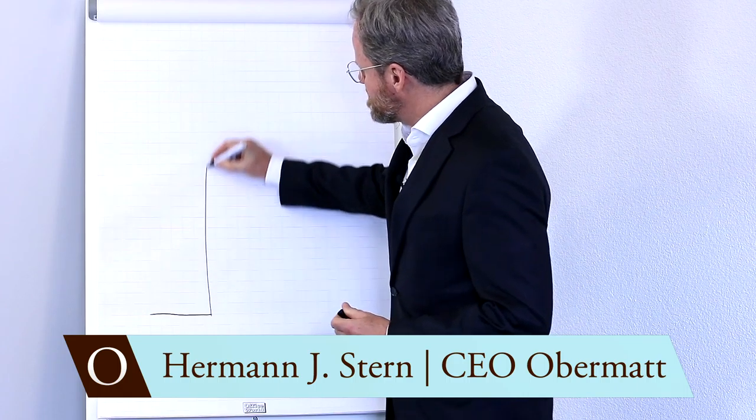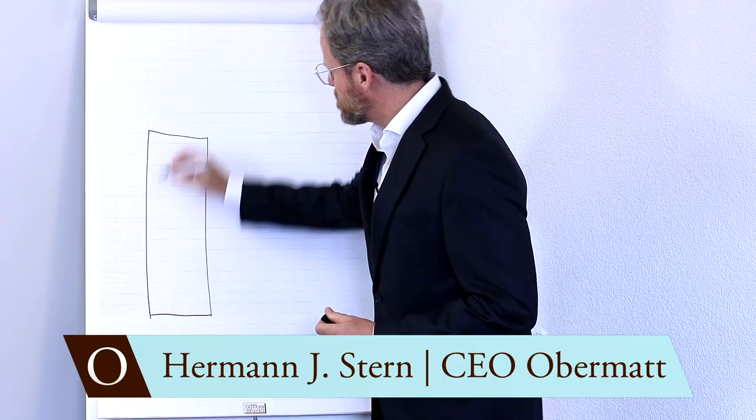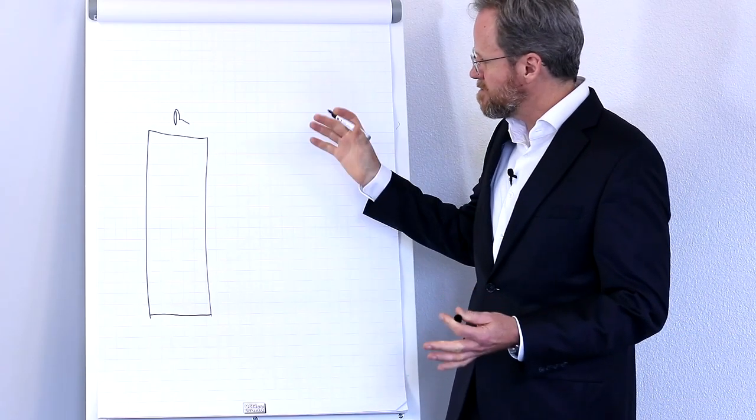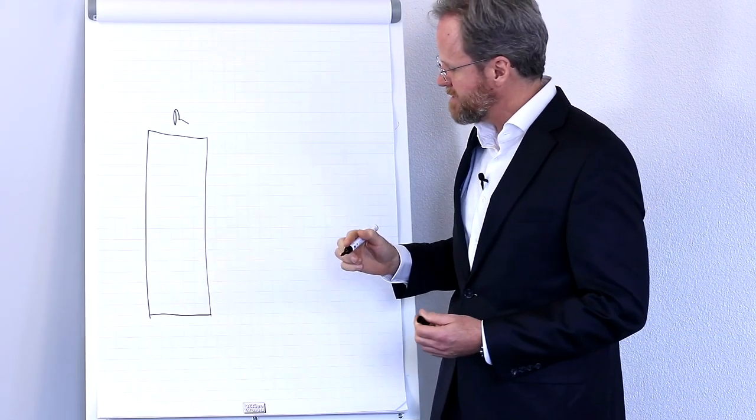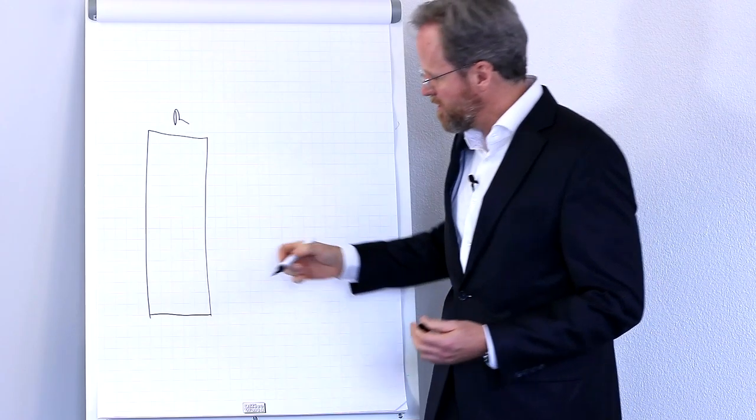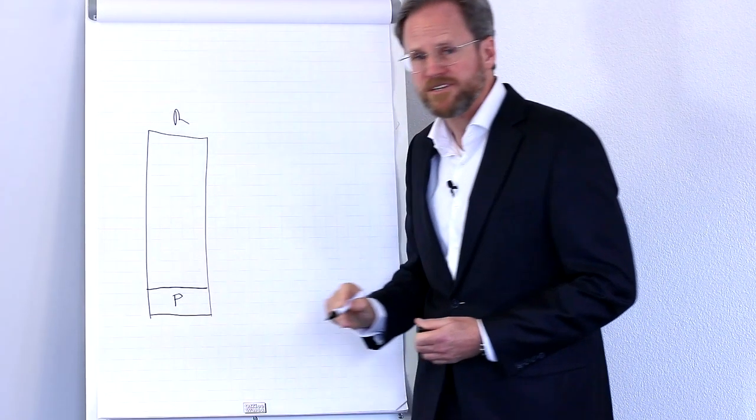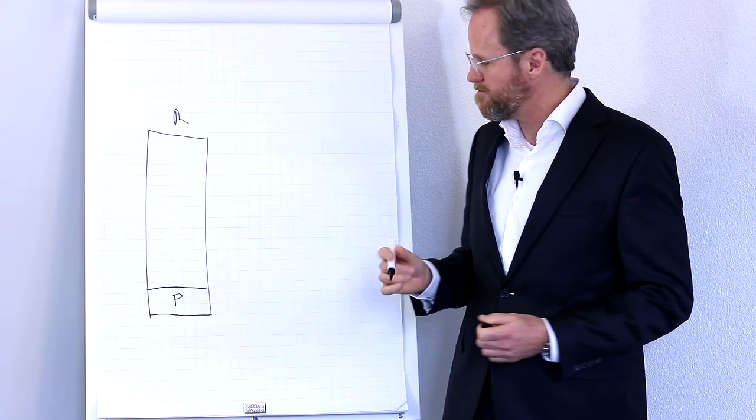One way of measuring size is basically you look at the revenues that the company has. The more revenues, the bigger. Then of course, if a company sells products, they want to make a profit. So you can look at the profit. The more profit, the bigger the company.